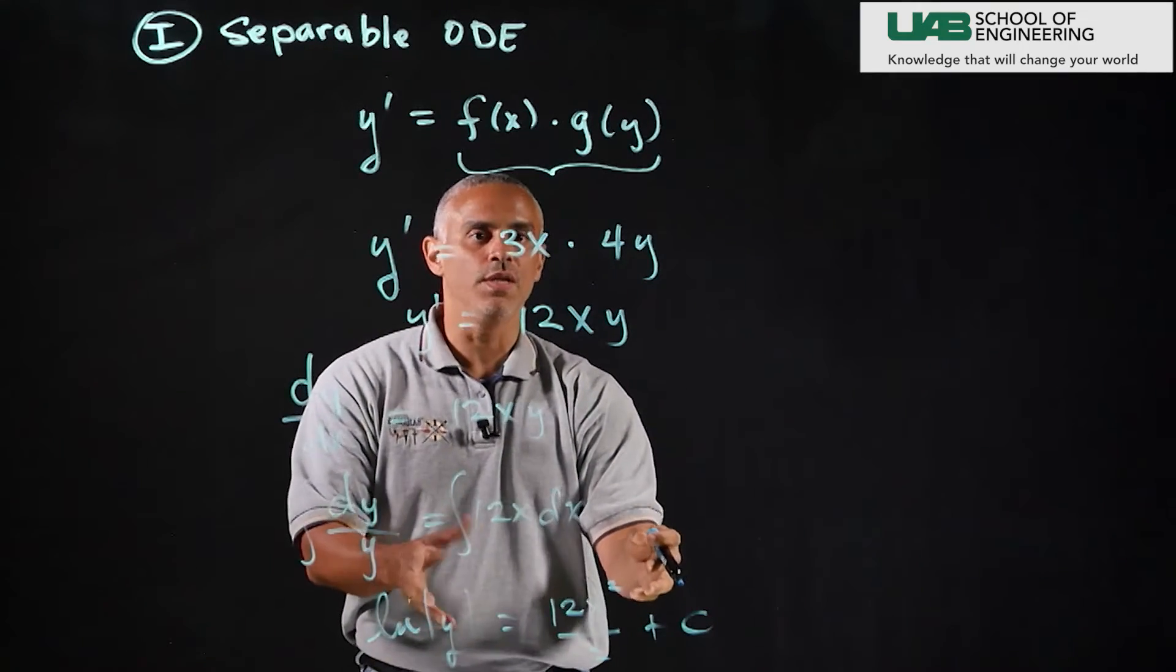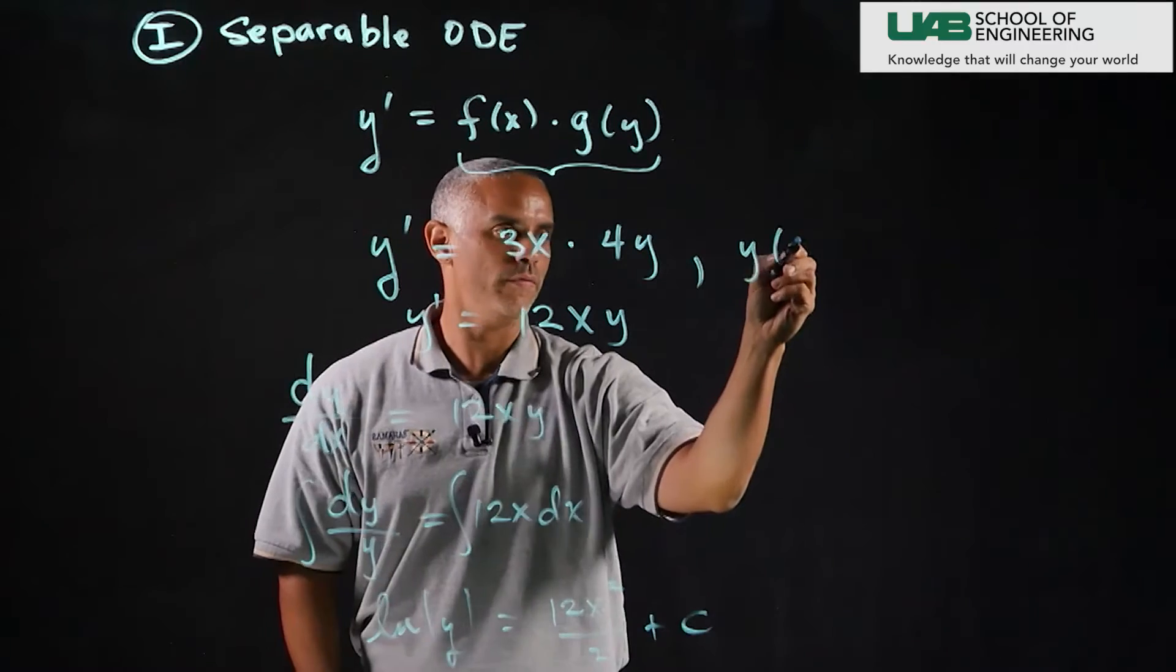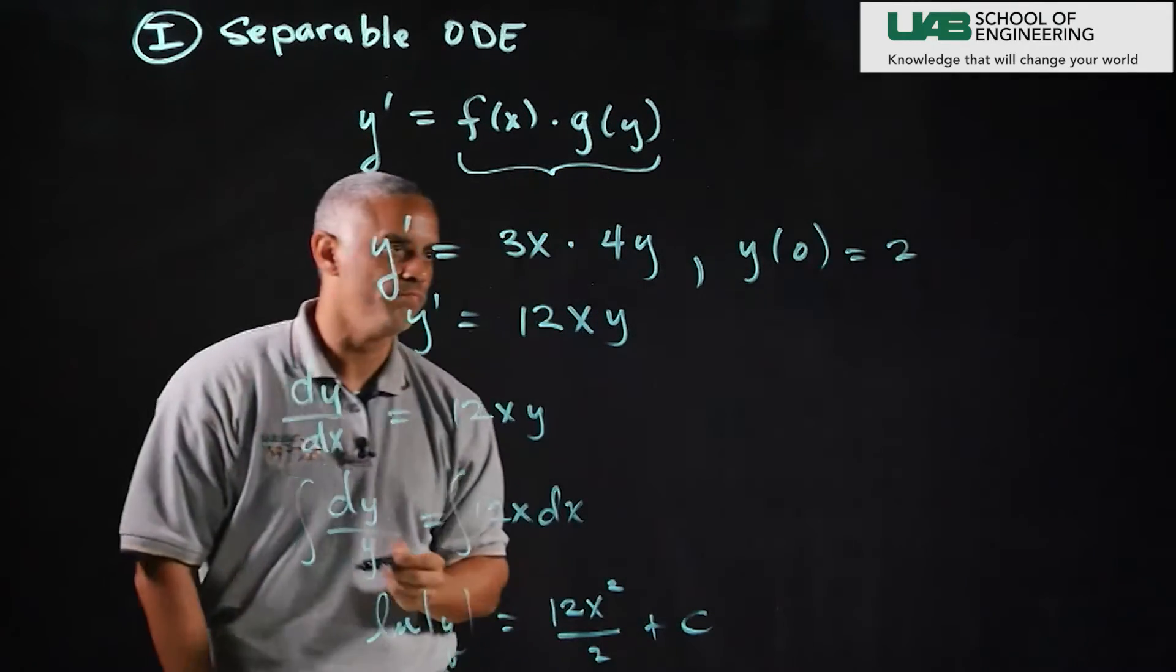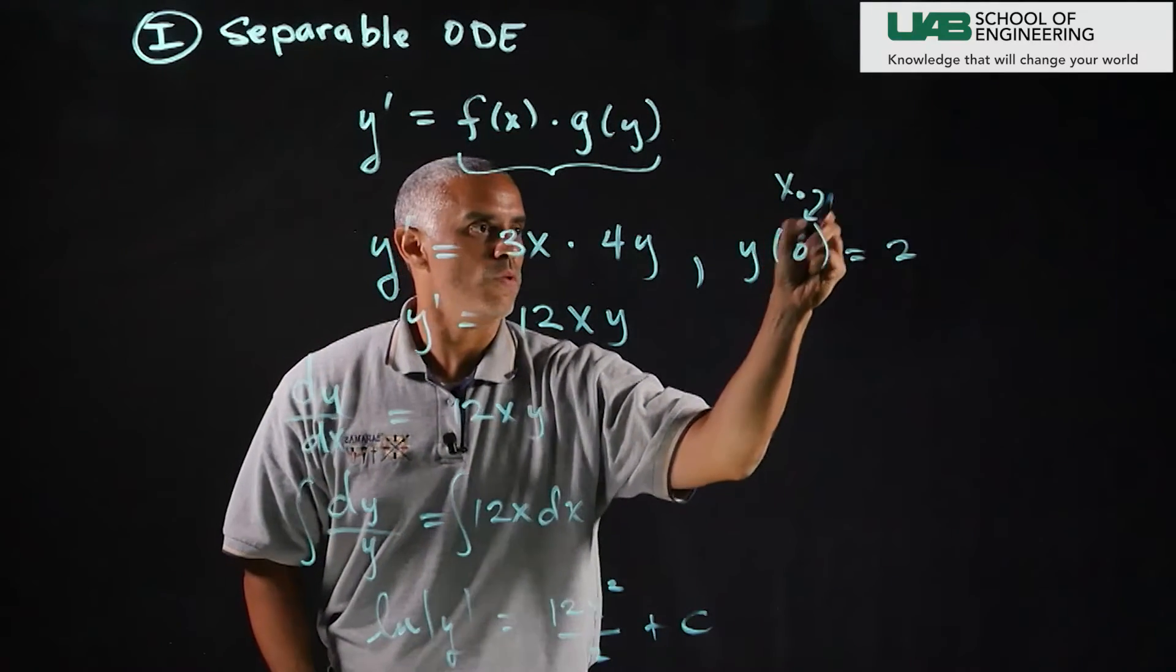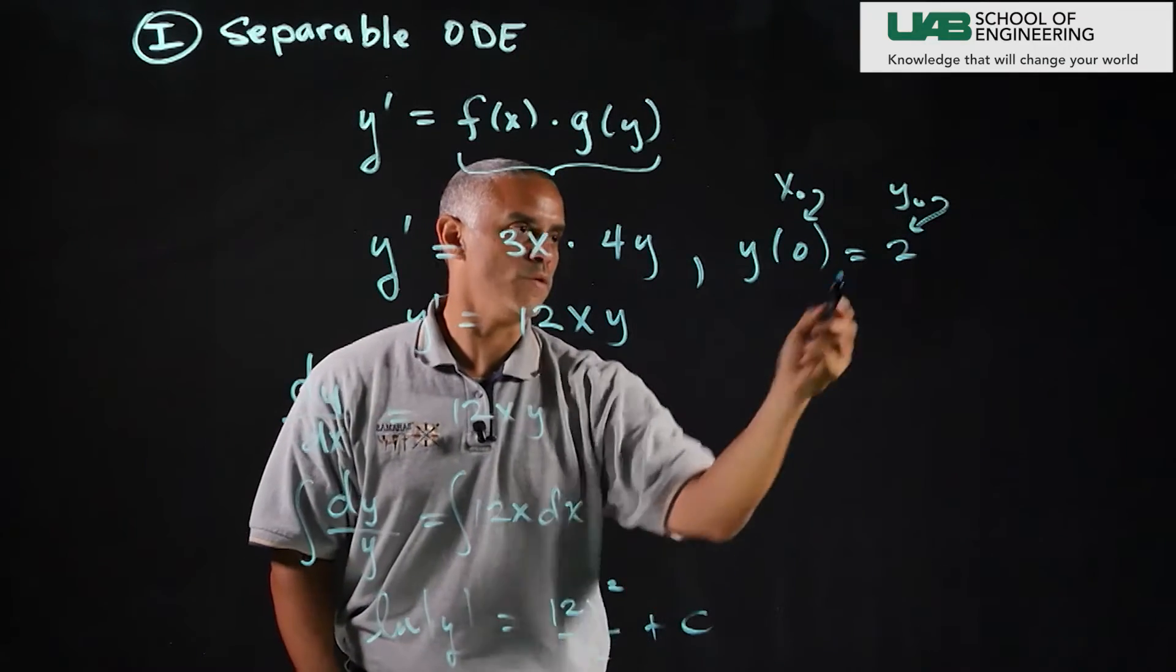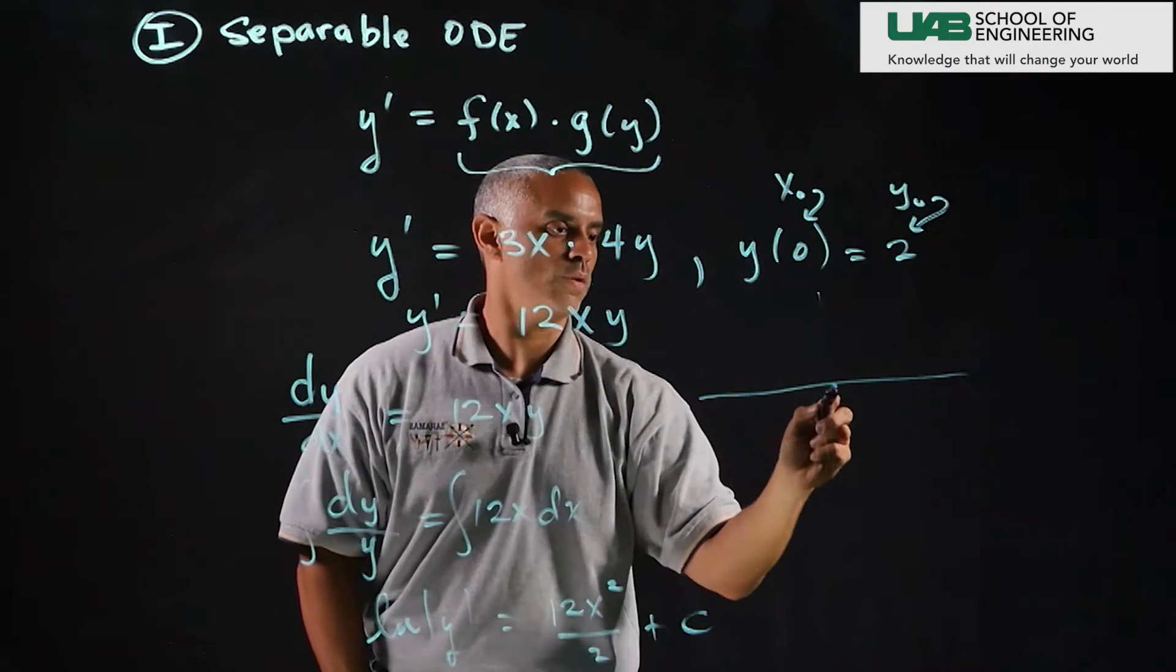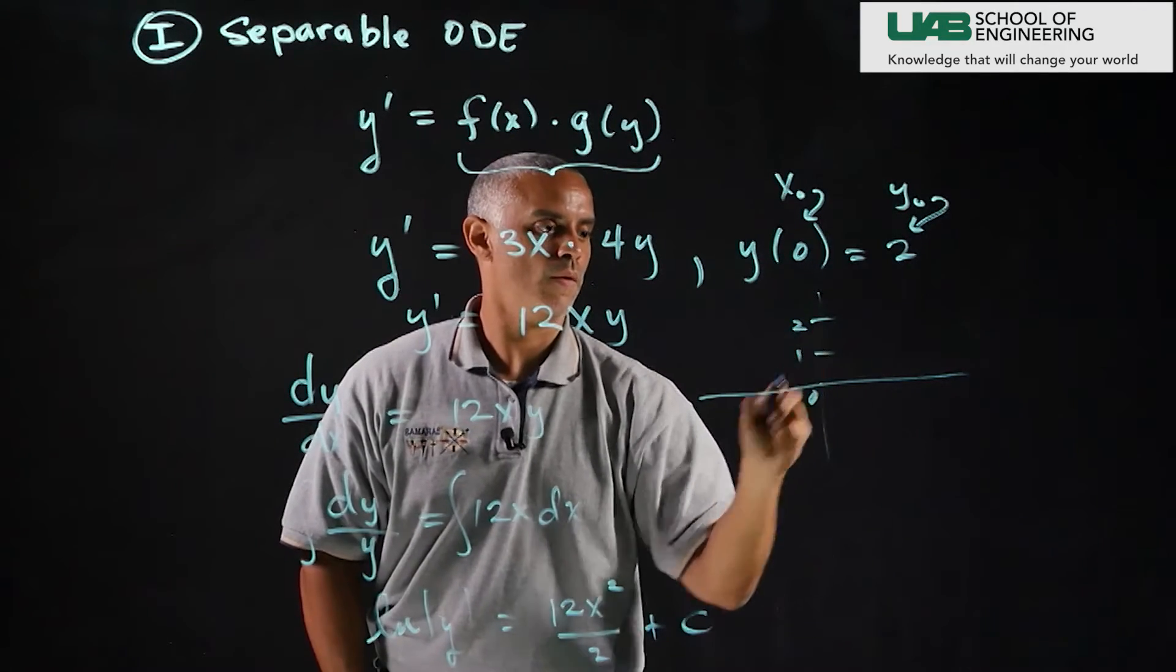Now if I have some initial condition let's impose y of 0 is equal to 2. It's arbitrary. So my x-naught we'll say is 0, my y-naught is 2. So here we want a solution that's going to pass through the point 0, 2.